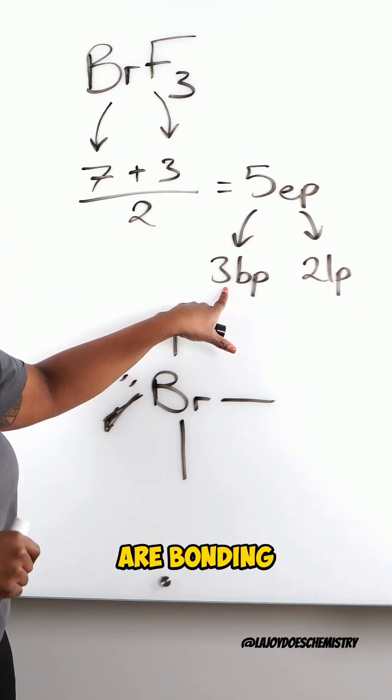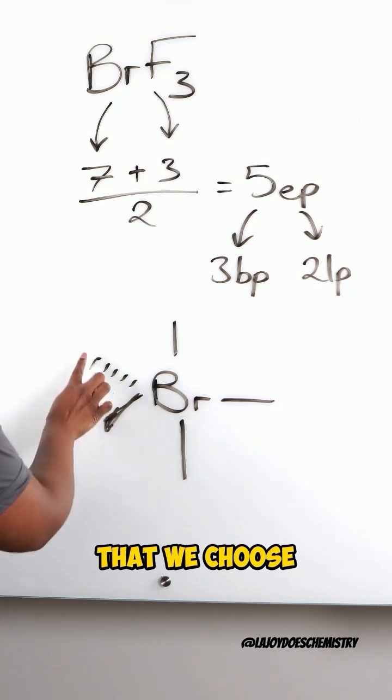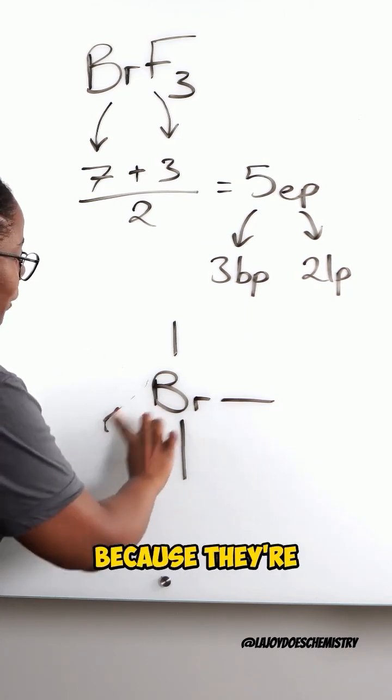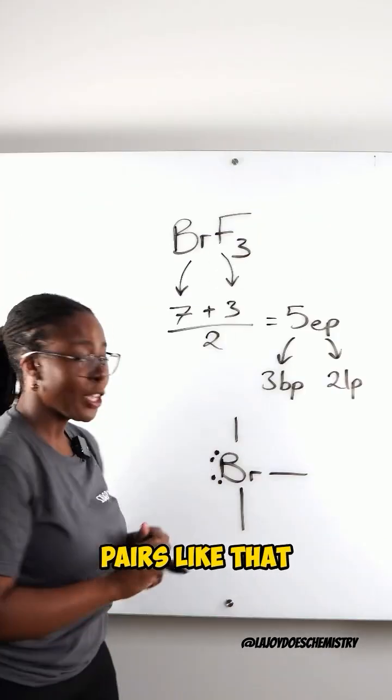But, because only 3 of these are bonding pairs, 2 of these bonds we're going to replace with lone pairs. And the 2 that we choose are the ones in the plane because they're 120 degrees away from each other. And we replace them with lone pairs like that.